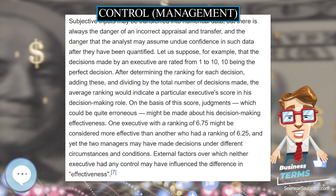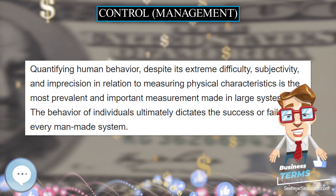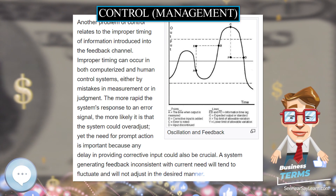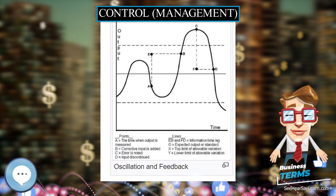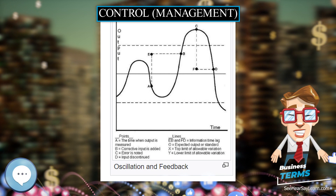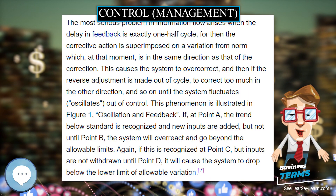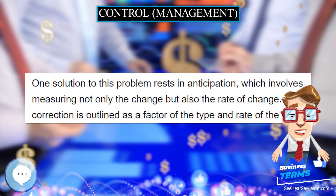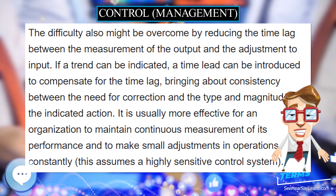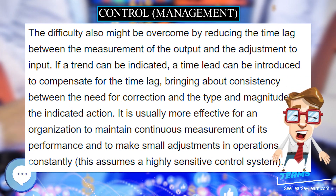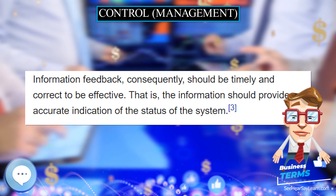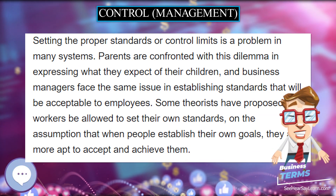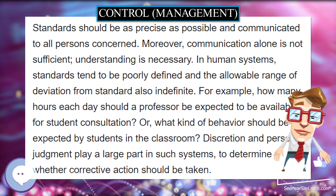The comparator may be located far from the operating system, although at least some elements must be in close proximity to operations. The measurement information can be transmitted to a distant point for comparison with the standard, and when deviations occur, the correcting input can be released from the distant point. This ability to control from afar means that aircraft can be flown by remote control, dangerous manufacturing processes can be operated from a safe distance, and national organizations can be directed from centralized headquarters.